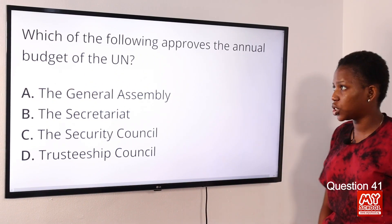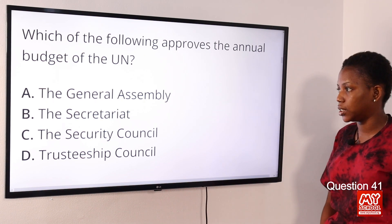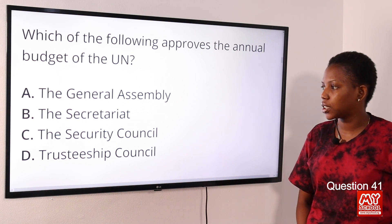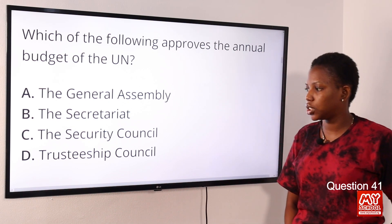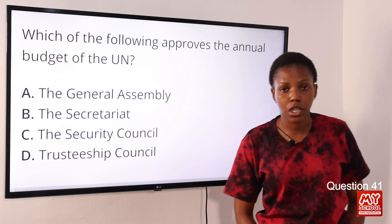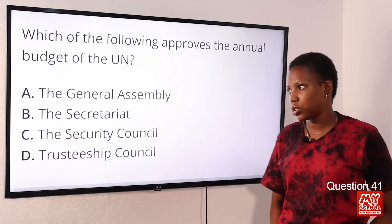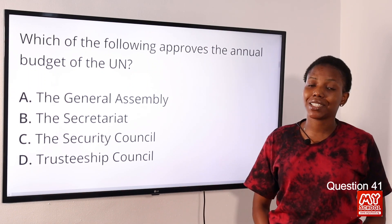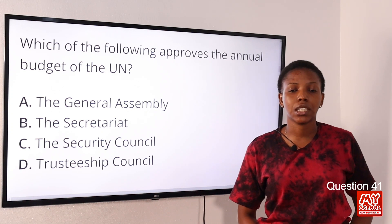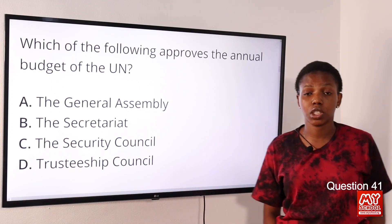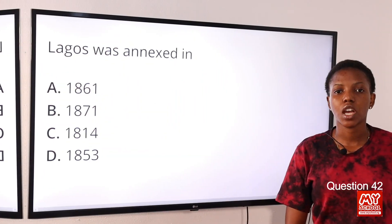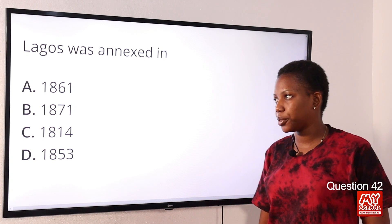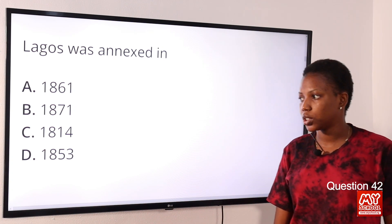If you have a better explanation or solution to any of these questions, please use the comment section below and indicate the question as well as the solution you would like to share. Question 41: Which of the following approves the annual budget of the United Nations? Option A: General Assembly. Option B: the Secretariat. Option C: the Security Council. Option D: Trusteeship Council. The UN has six organs. The answer is Option A, General Assembly. The General Assembly approves budgets, discusses, debates, and gives recommendations on subjects pertaining to international peace and security.